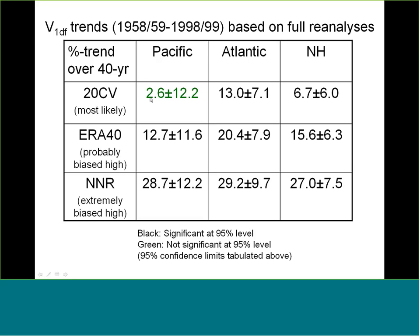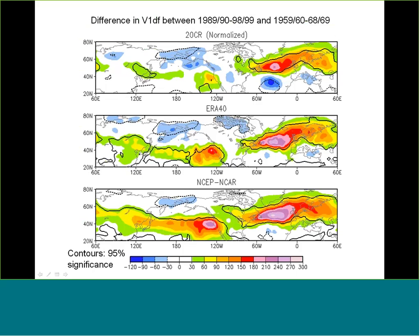Based on the comparison with observations, we estimate that the 20th century reanalysis trend estimate is probably closest to the actual trend. In that case, the Pacific storm track increase is probably not significant. The Atlantic storm track change is significant, but the northern hemisphere one is barely significant at the 95% level — and actually the northern hemisphere increase largely reflects the Atlantic increase. The NCEP-NCAR trend over the same period appears to be extremely strongly biased.